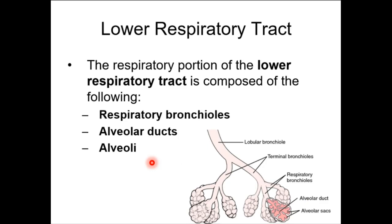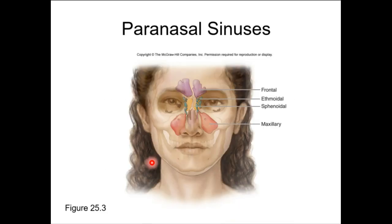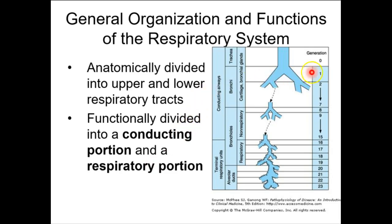Those bronchioles continue to get smaller and smaller as they split. Every time they split, we call that a generation. The trachea is generation zero, main bronchi are generation one, secondary bronchi are generation two, and you'll have many, many generations. This represents exponential growth because every time it splits, they're all splitting. So down here at generation 23, you've got your alveoli.